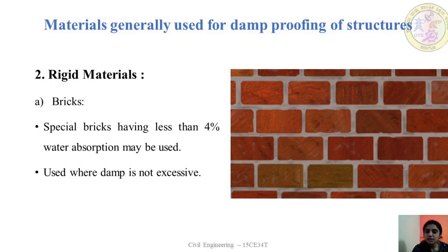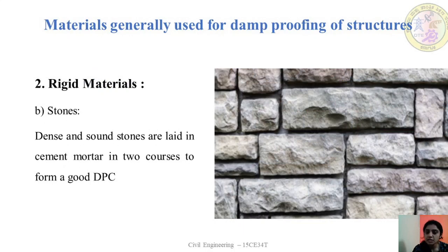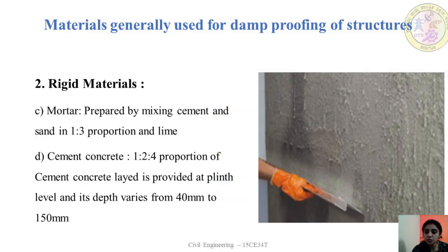Rigid materials include: special bricks with water absorption less than 4% of their weight, used only where dampness is not excessive; dense sound stones such as slate and granite acting as damp proof courses; mortar used either as a bedding mortar or waterproofing mortar; and cement concrete in a 1:2:4 proportion provided at plinth level with a thickness of 40 mm to 150 mm.